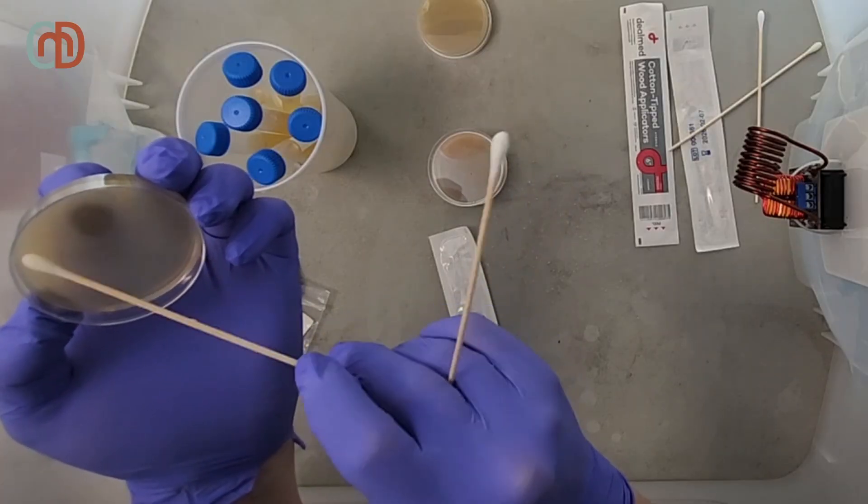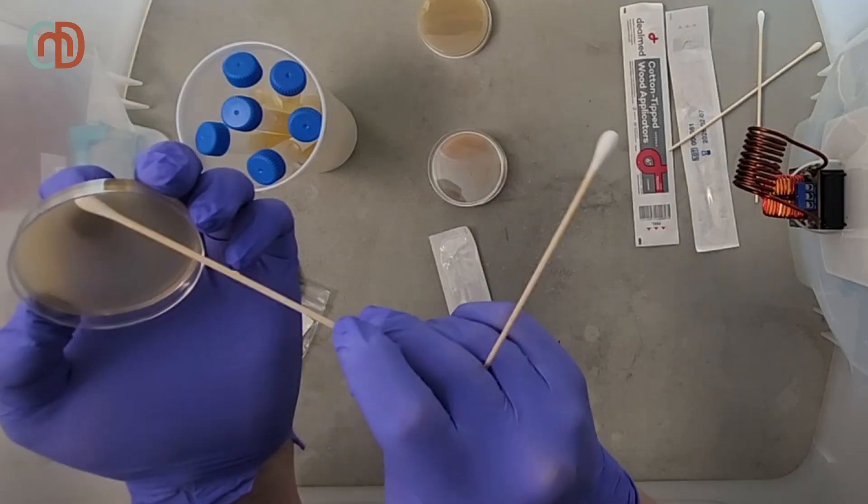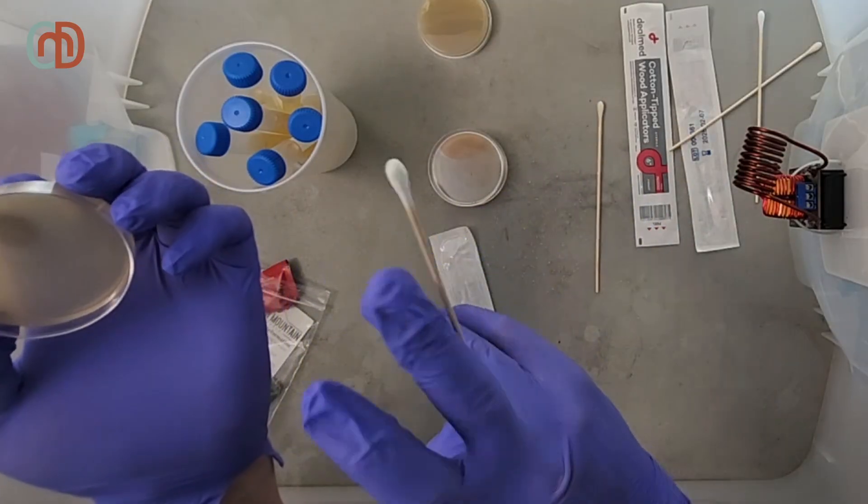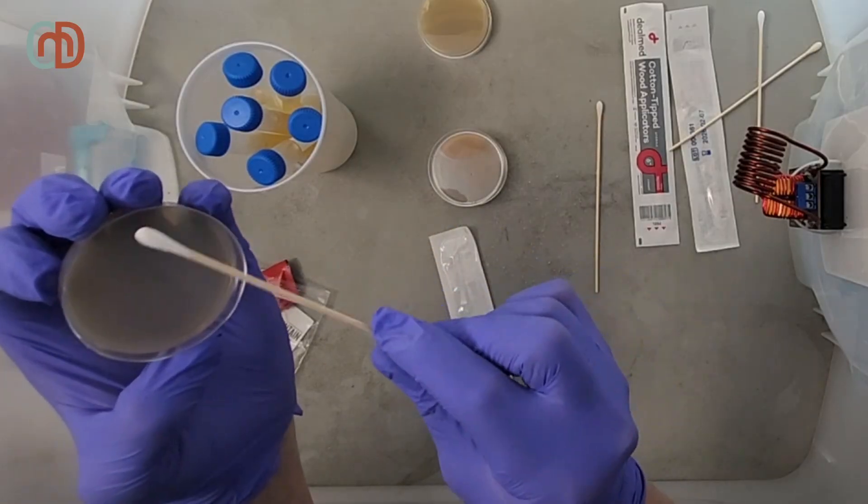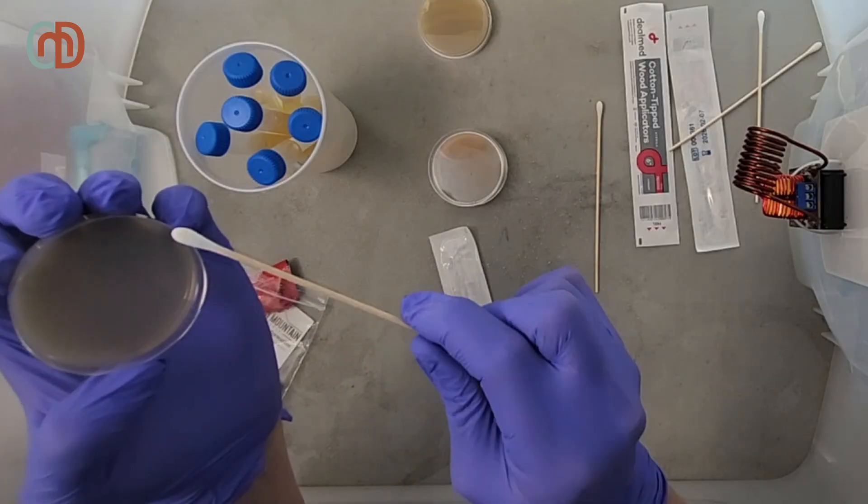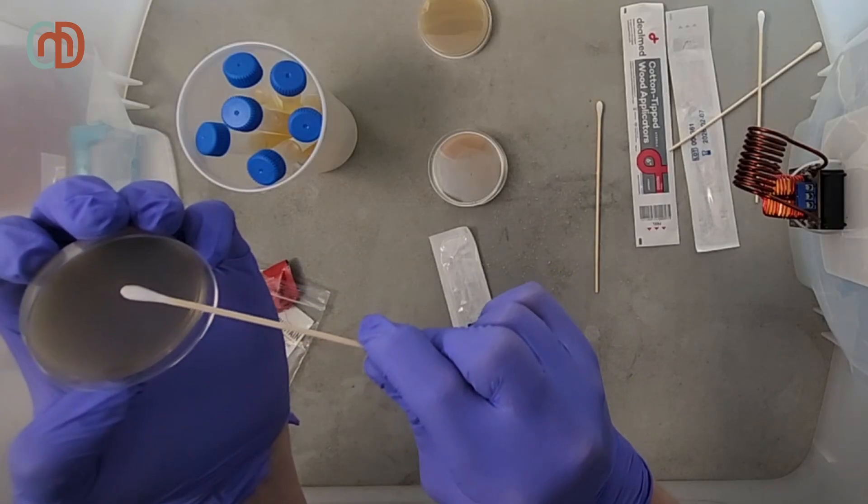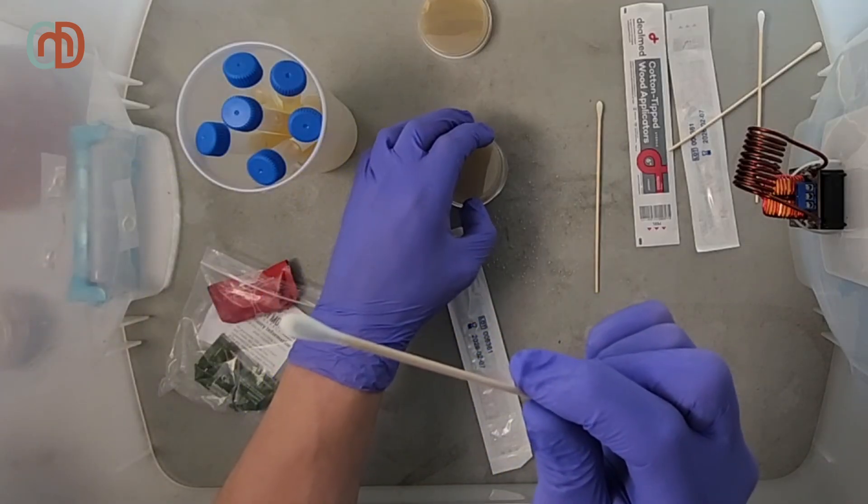What this does is it isolates individual cells by slowly diluting them over the streaks. I start by making a dense area of cells. Then taking another swab, I grab a few of them from that area and create a less dense area of cells. Then rotating the swab, I grab a little bit out of that area and create an even less dense area of cells.